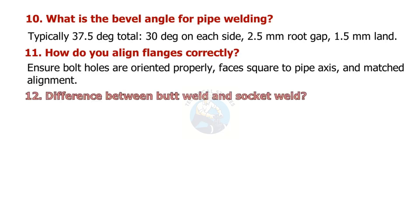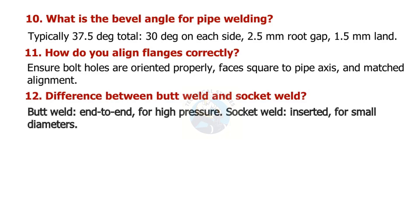What is the difference between butt weld and socket weld? Butt weld is end-to-end, used for high pressure. Socket weld is inserted, used for small diameters.